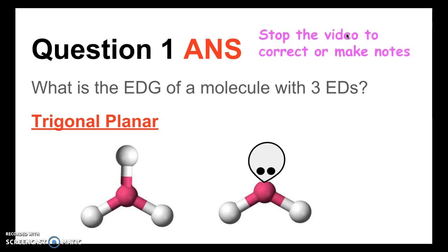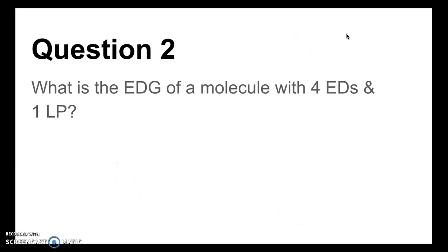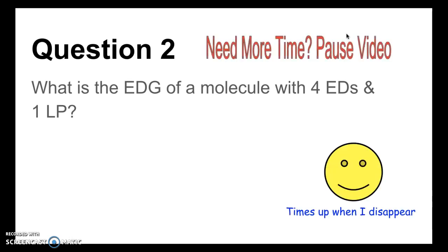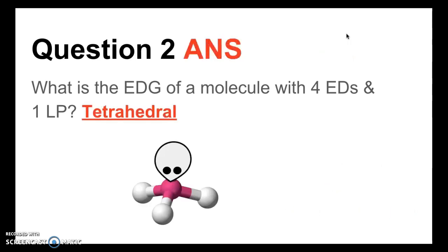Correct your answers or jot down any notes now. Question 2: What is the electron domain geometry of a molecule with four electron domains and one lone pair? The answer is tetrahedral. This was a bit of a trick because for the electron domain geometry, all you need to know is the number of electron domains, not the number of lone pairs. So you can ignore the lone pair and just focus on four electron domains. Anything with four electron domains will have a tetrahedral geometry no matter how many lone pairs it has.